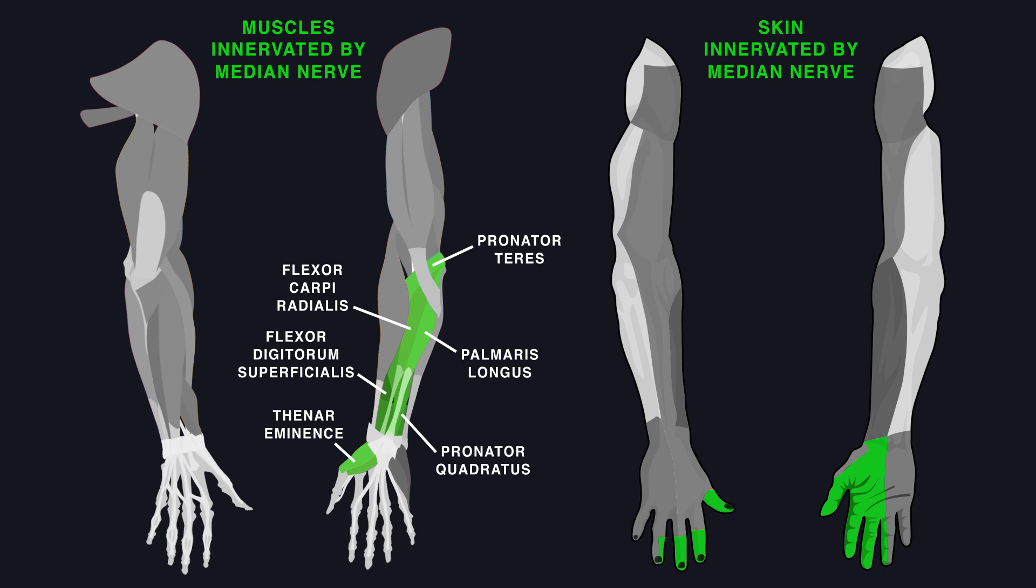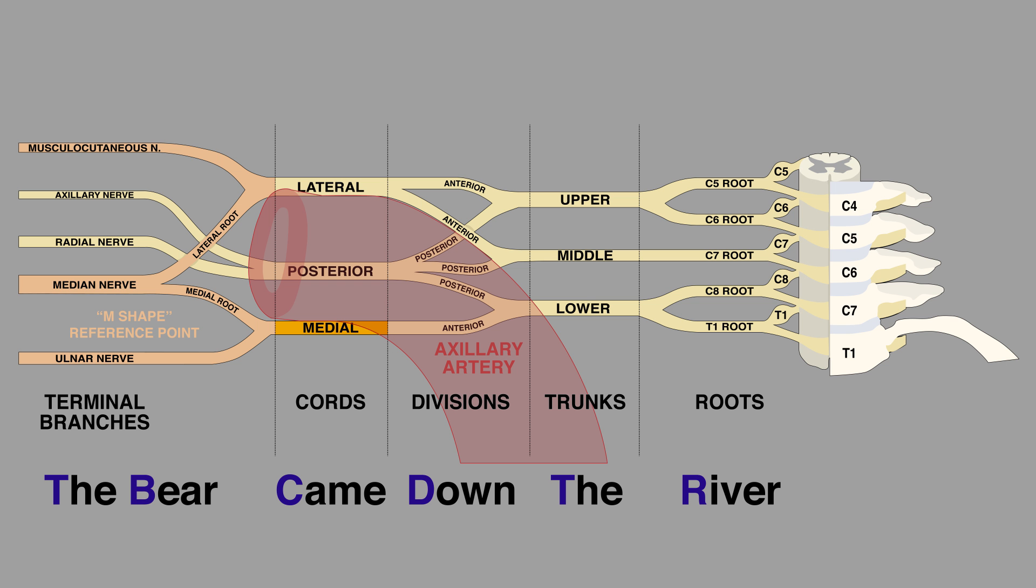The median nerve proper supplies the muscles of the front of the forearm and muscles of the thenar eminence to control hand movements. The medial cord splits into the medial root of the median nerve and the ulnar nerve. The lateral and medial root of the median nerve and the median nerve proper, together with the musculocutaneous nerve and the ulnar nerve on either side of it, together form an M-shape, which serves as an important anatomical reference point.